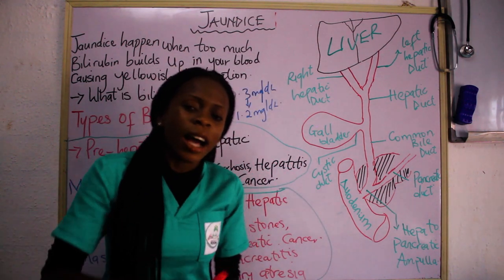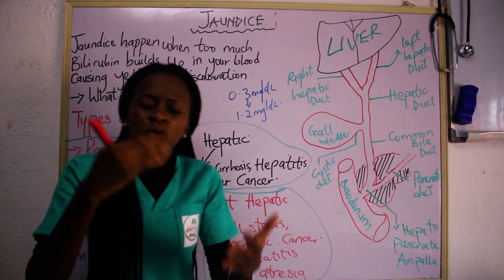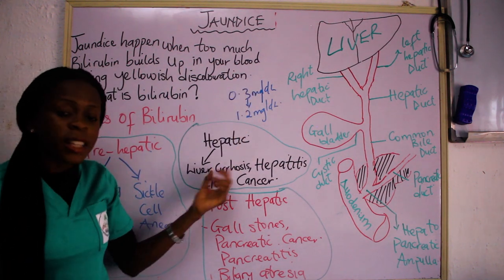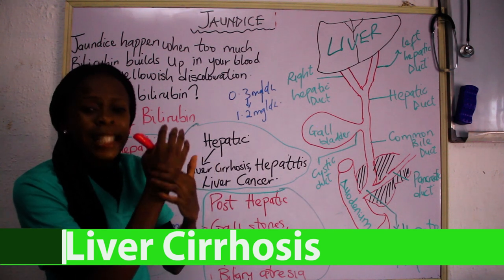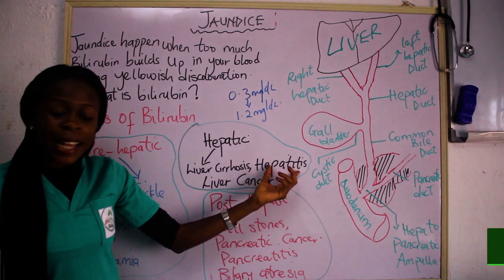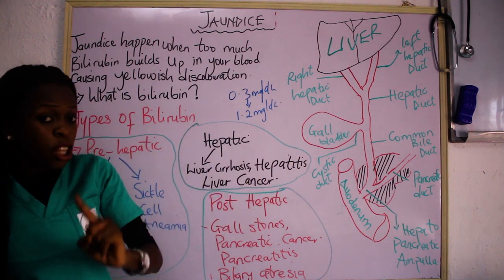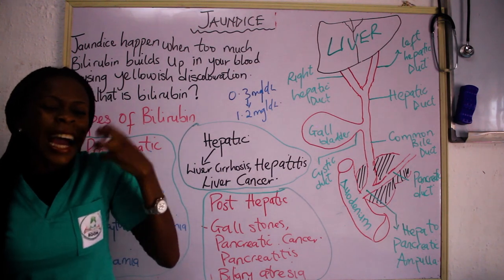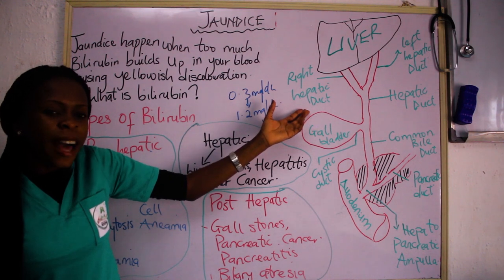The second type is hepatic jaundice, meaning something is wrong with the liver — the liver is unable to take bilirubin and transport it out of the body. Hepatic jaundice can be caused by liver cirrhosis, which is the scarring of the liver that impairs its function. It can also be caused by hepatitis, especially viral hepatitis, and liver cancer. In hepatic jaundice, the liver is the organ being affected, depriving it of carrying out its bilirubin processing function.